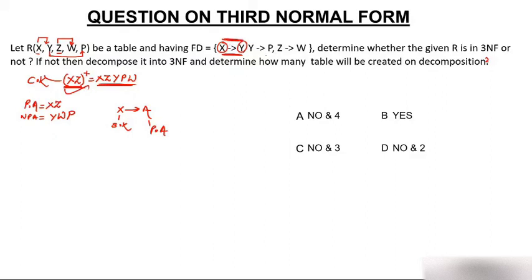If any one of the functional dependencies is not in 3NF, there is no need to check further, because for a table to be in 3NF all its functional dependencies must be in 3NF. While checking, we found the first dependency is not in 3NF, so the entire table is not in 3NF.